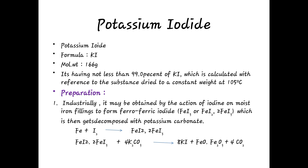Potassium iodide has a purity of not less than 99% of KI, calculated with reference to the substance dried at 105 degrees Celsius.